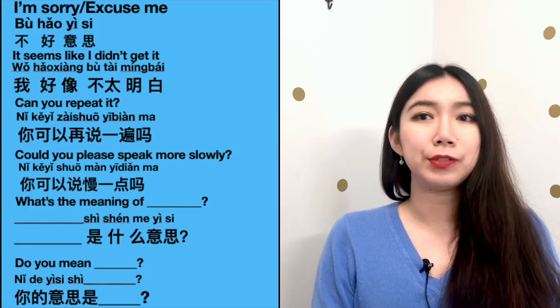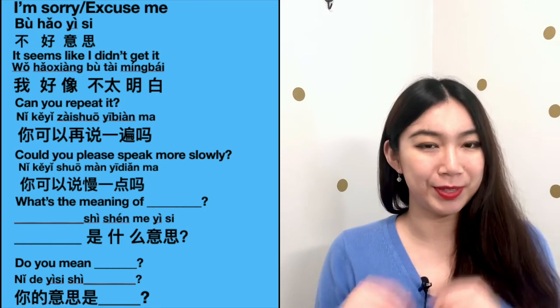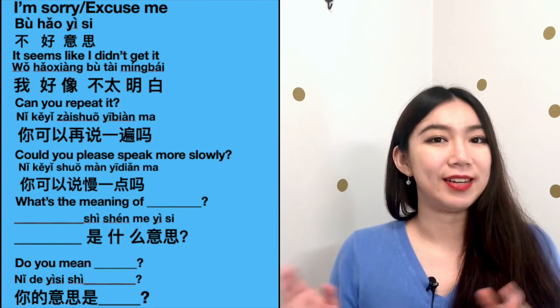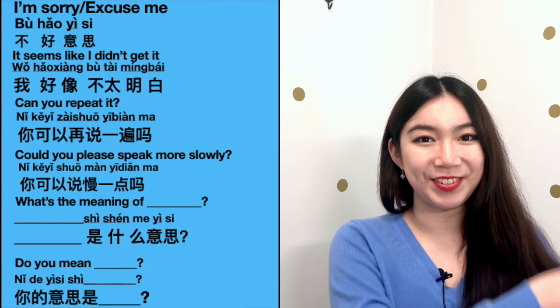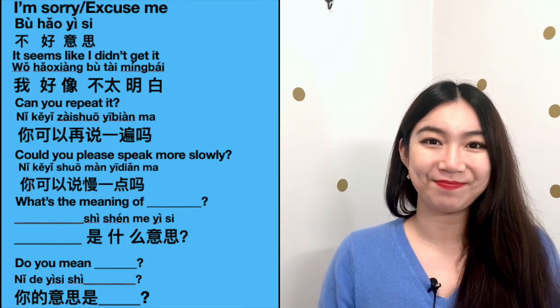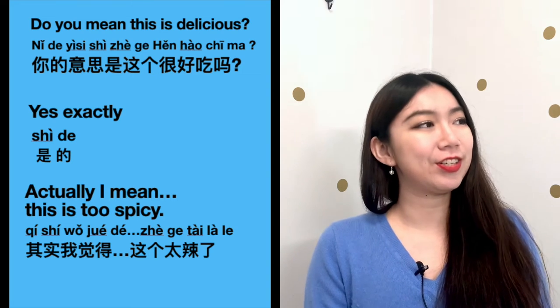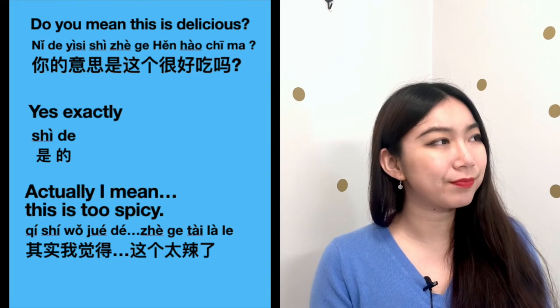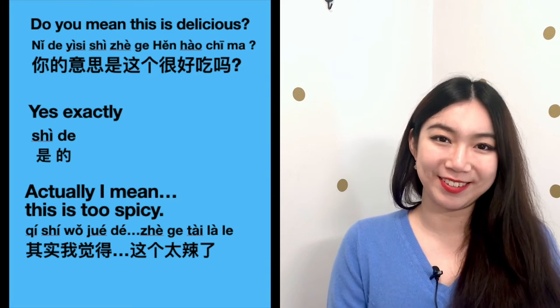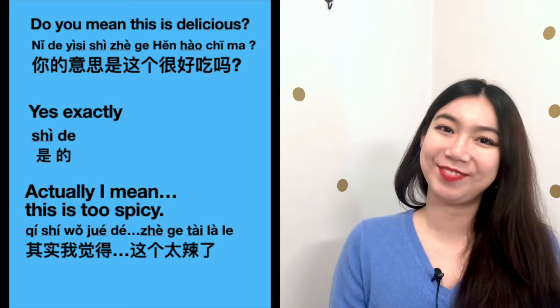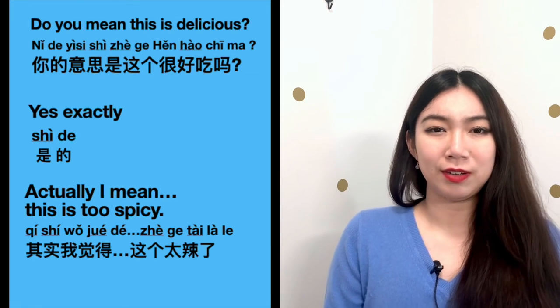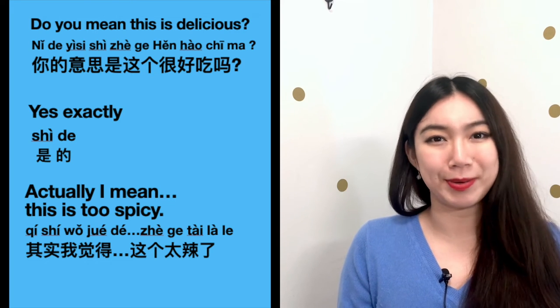When you hear something and you're not sure if you understood correctly, you can rephrase it to confirm: 'Do you mean this?' — 你的意思是 — do you mean this? For example: 'Do you mean this is delicious?' — 你的意思是说这个很好吃吗? Others may answer 'Yes, exactly!' or 'Actually, I mean this is a little bit too spicy.'